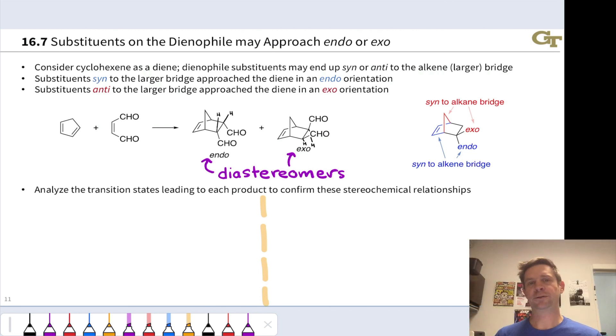And in order to see how these come about, I want to show you the transition states that lead to each of these, and we're going to look at the products in three dimensions to get a better handle on the endo and exo isomers.